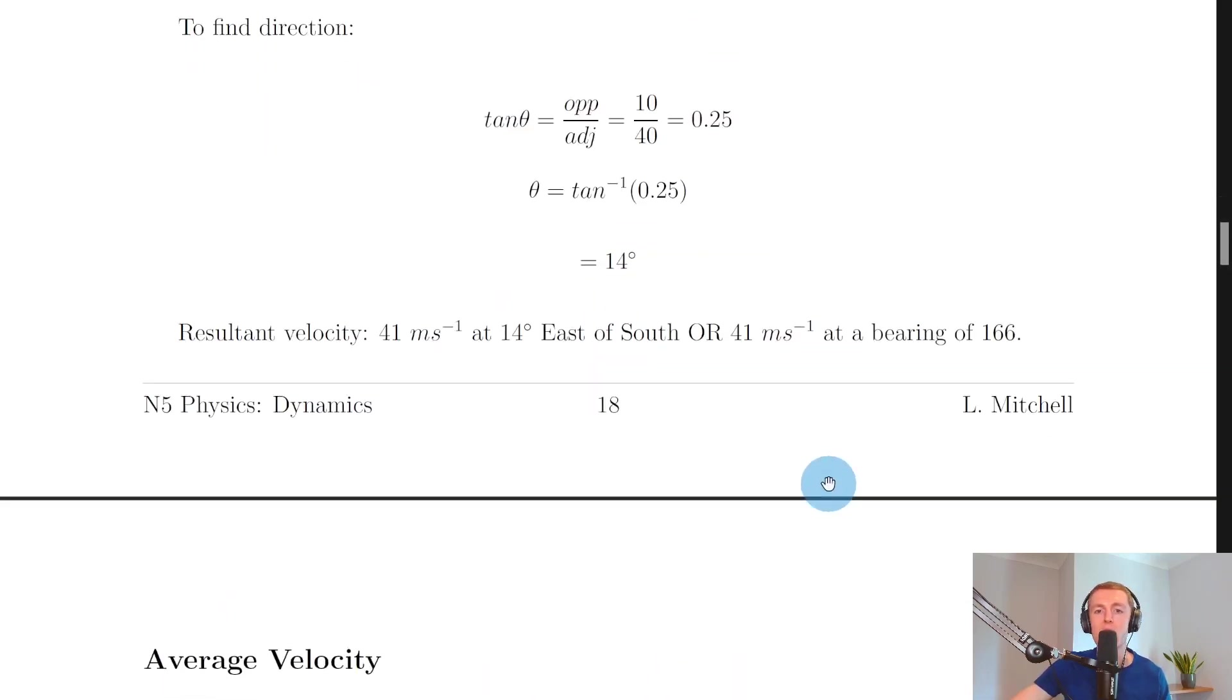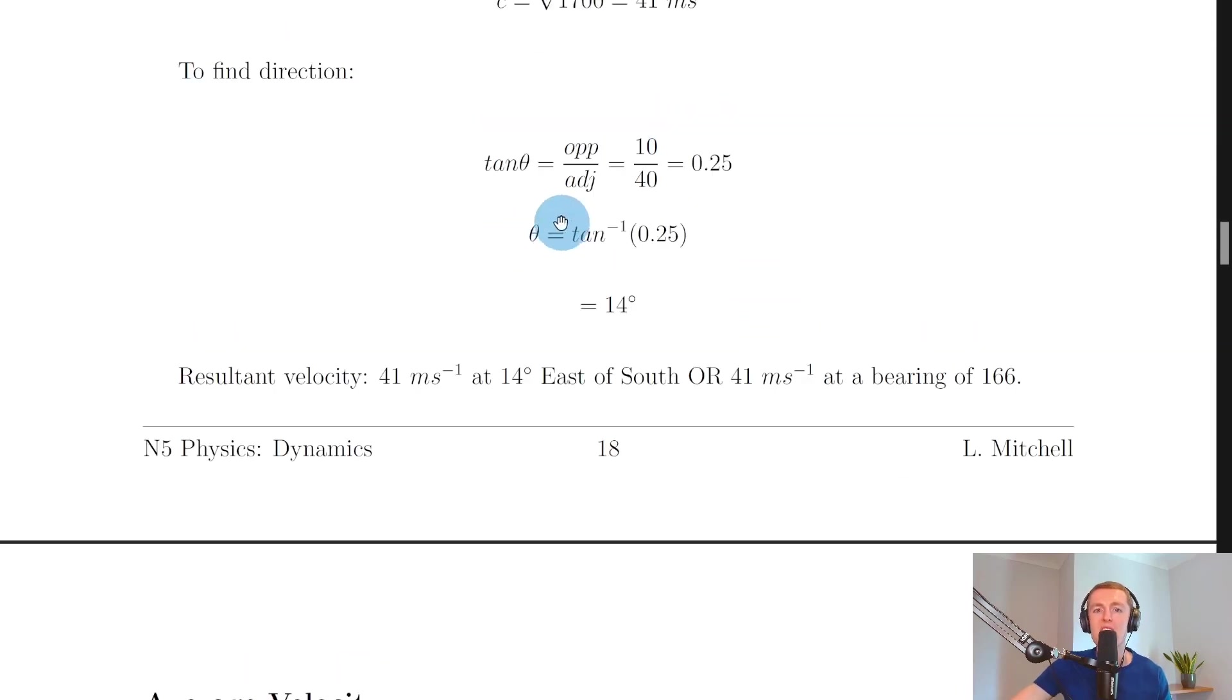So we have 10 over 40 which gives us 0.25 or a quarter and then to get the angle theta we need to do inverse tan or shift tan in your calculator to get inverse tan of 0.25 and putting that into your calculator will give you roughly 14 degrees.